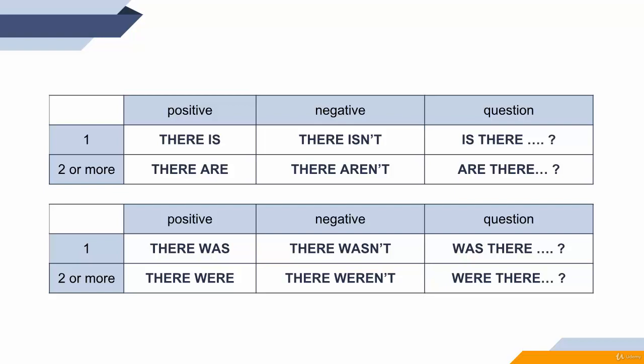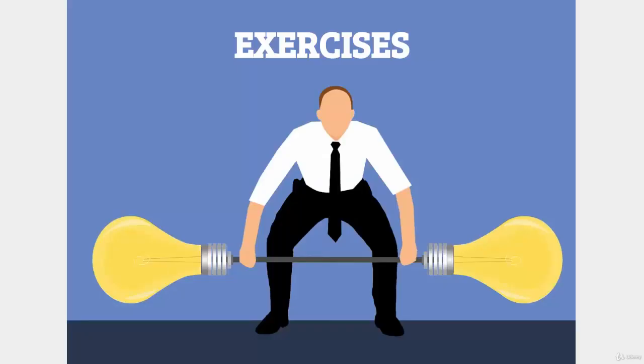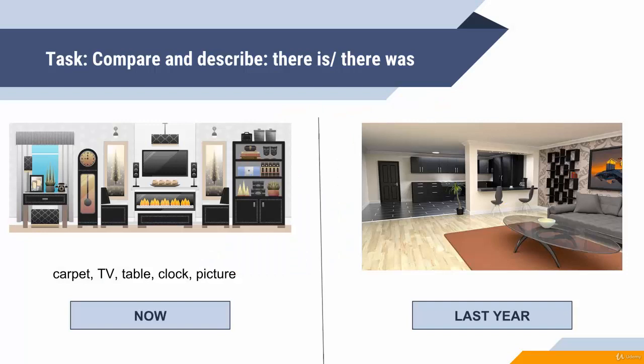For two or more things: there were, there weren't, were there. It's easy, so let's go on to the practice. You may find, of course, the PDF.